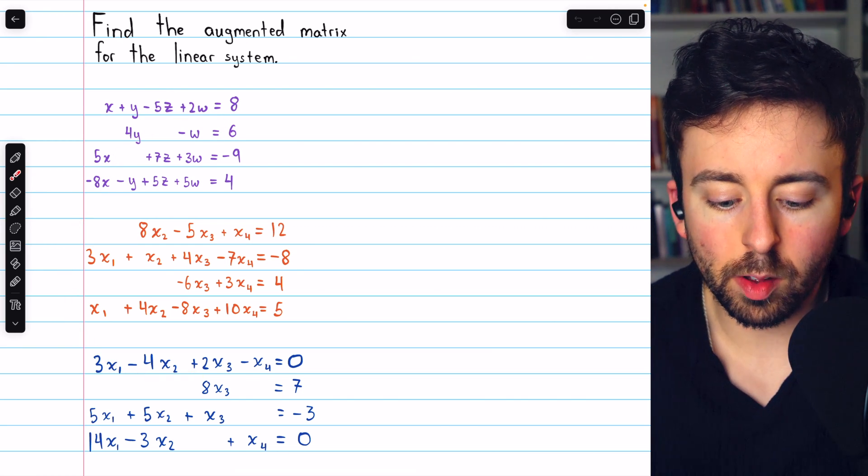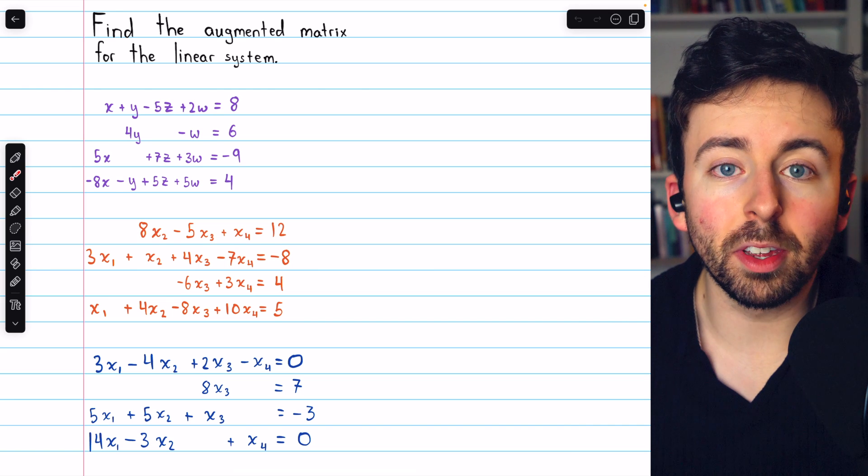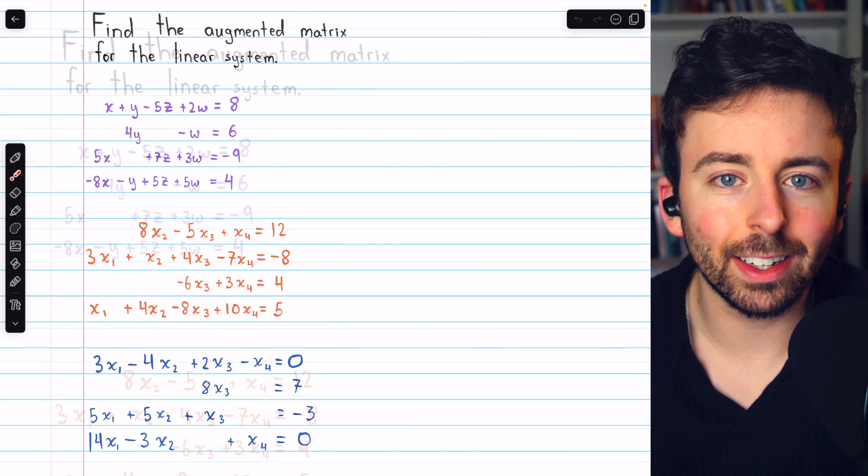Let's do these three examples of finding the augmented matrix for the linear system. This is an important process we're going to do a lot throughout this course, so it's always good to get some practice.